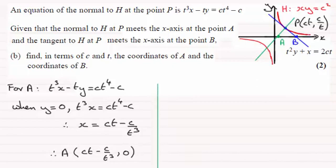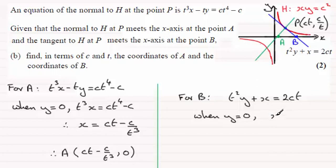And then we've just got to go on and look at B. So for B, we've got our equation of our tangent, which was t squared y plus x equals 2ct. And for this one, again, all we need to do is just set y equal to 0. So when y equals 0, you can see that x will equal 2ct.